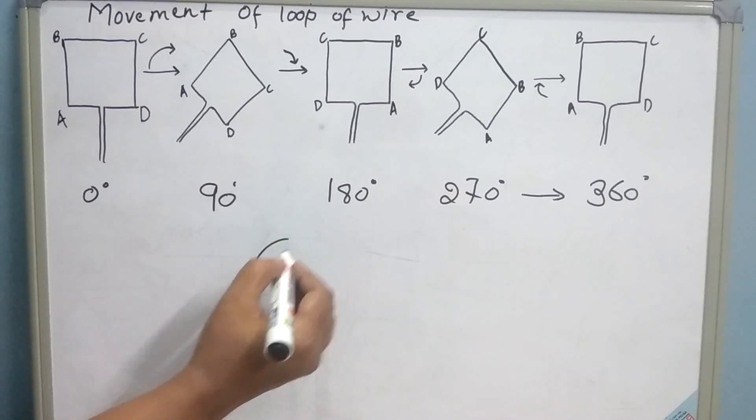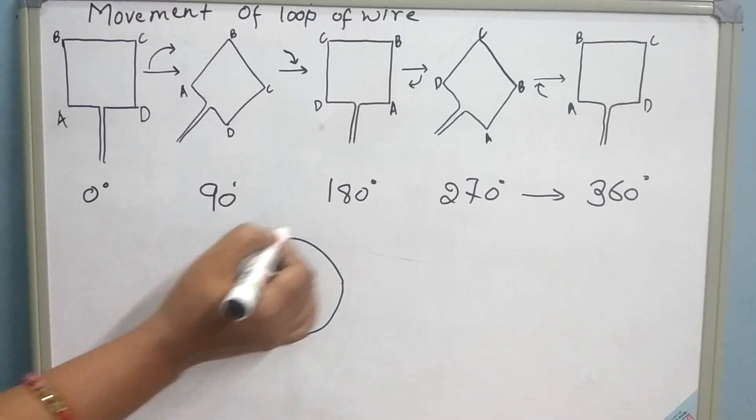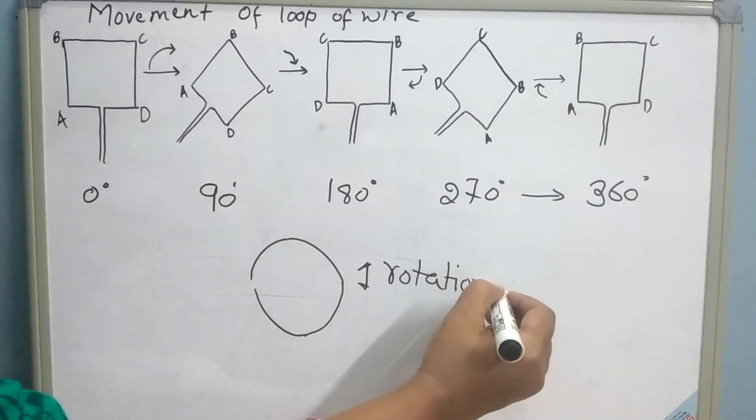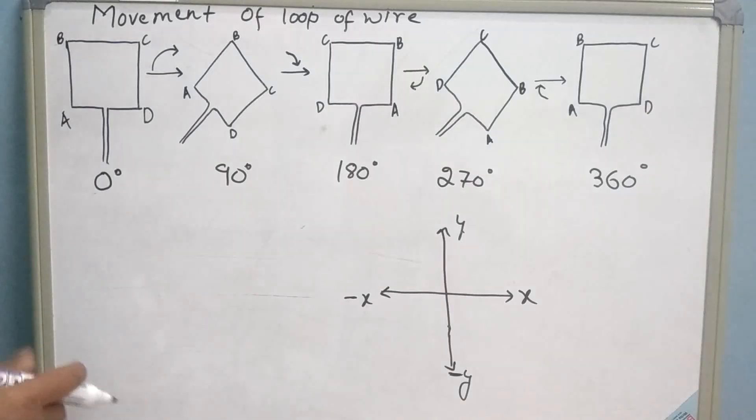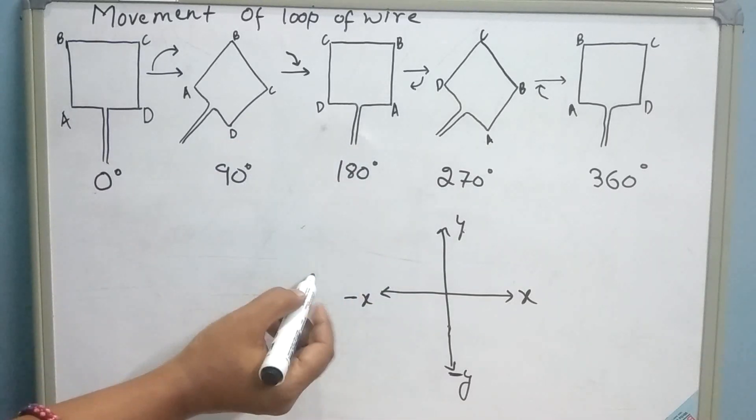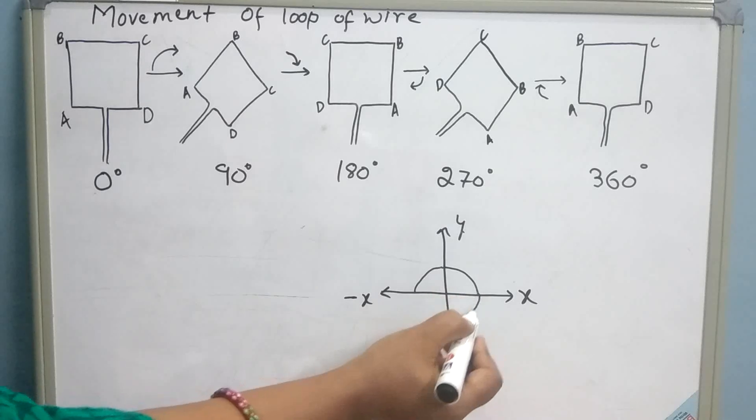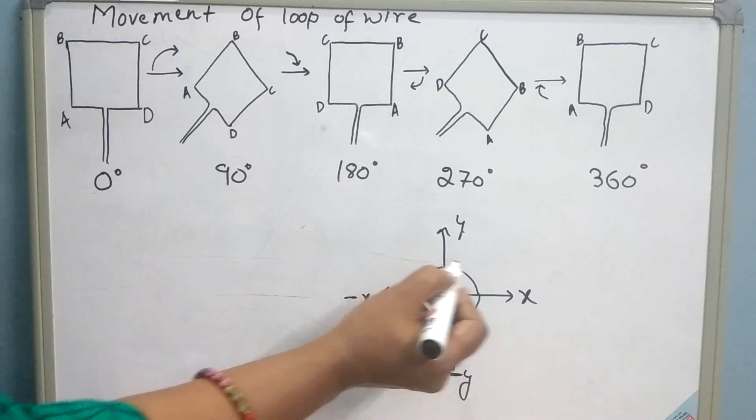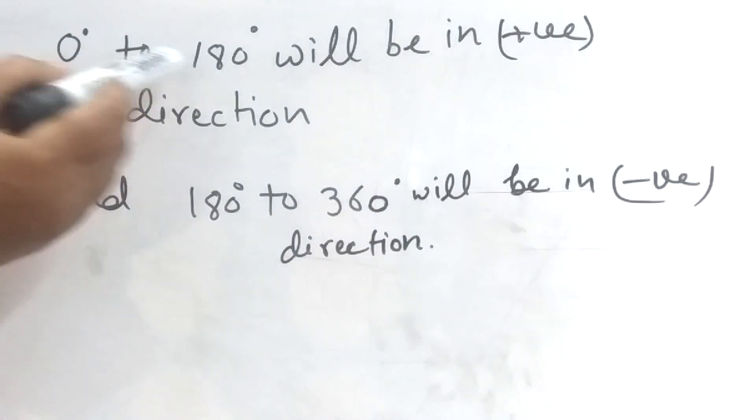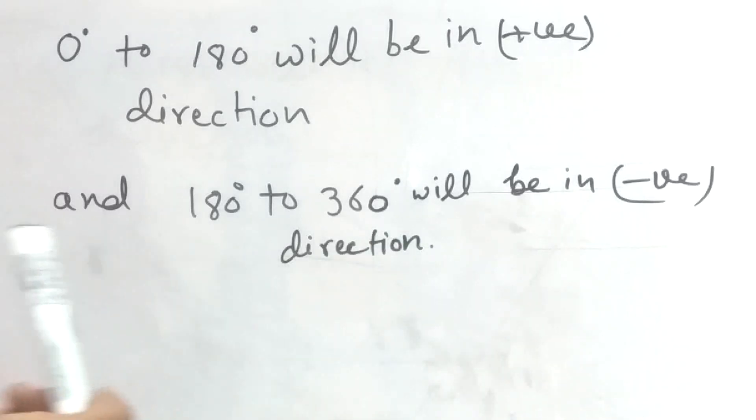So in this way, first 90, second 90, third 90, and fourth 90. In this way, the loop covers 360 degrees in one rotation. These angles are known as phases of loop, and when we will draw this loop on the graph, it will be like this. First 90, second 90, third 90, and fourth 90. So in this way, it will complete one rotation. When we see the direction, 0 to 180 degrees will be in positive direction, and 180 to 360 degrees will be in negative direction.